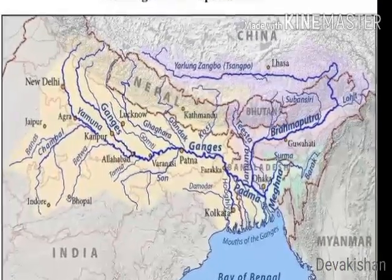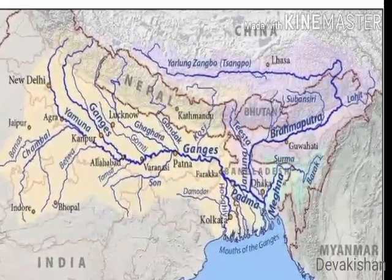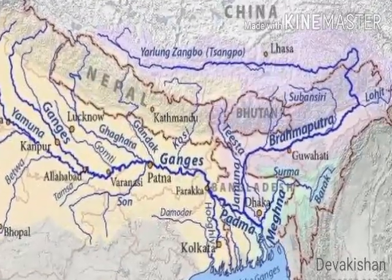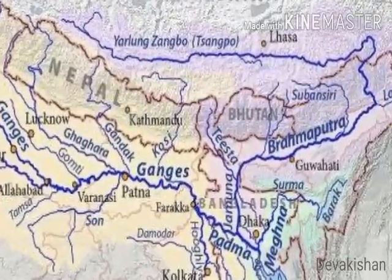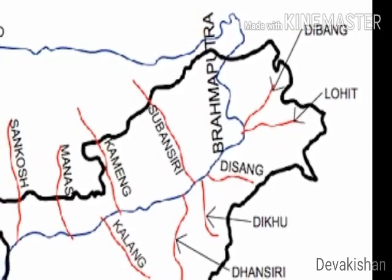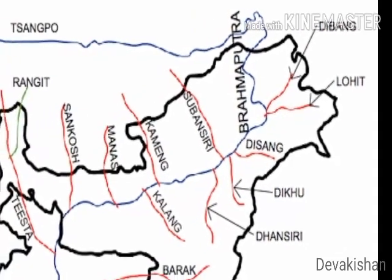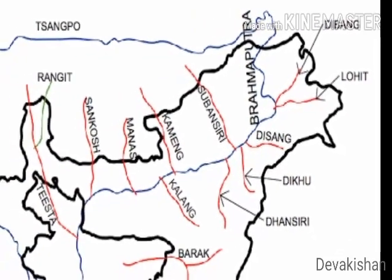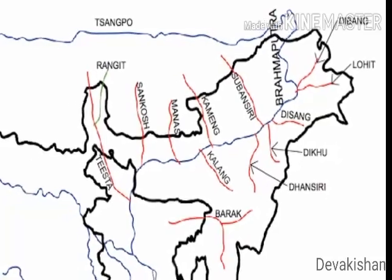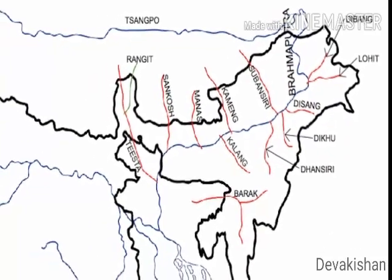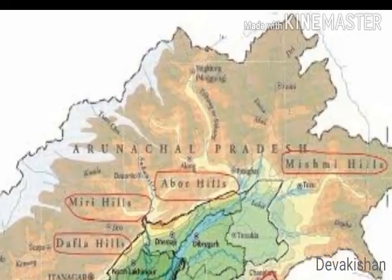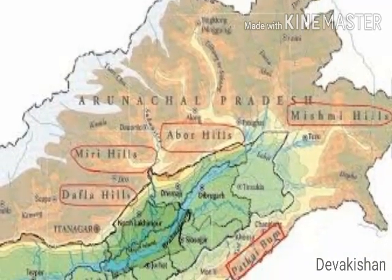The easternmost boundary of the Himalayas is the Brahmaputra Valley. In Arunachal Pradesh, beyond the Brahmaputra Valley, the Himalayas take a hairpin bend to the south and act as the eastern boundary of India, running through the northeastern states. These divisions are known as Purwanchal and are mostly composed of sedimentary sandstones.